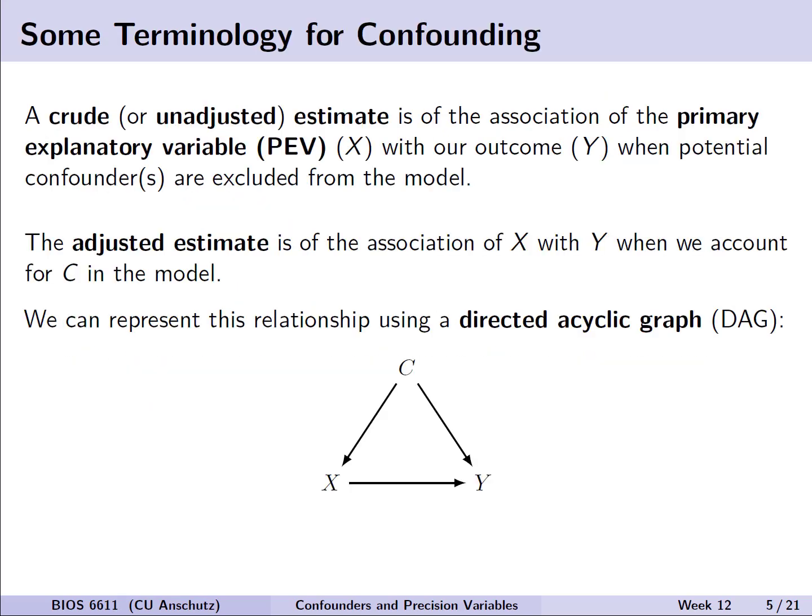First we have the idea of a crude, or unadjusted, estimate — the association of the primary explanatory variable (PEV), our x variable of interest, with the outcome y, when we exclude confounders from the model. The converse is an adjusted model, which is the association of x and y when we also account for c in our model. One common way of representing this is what we call a DAG, or directed acyclic graph.